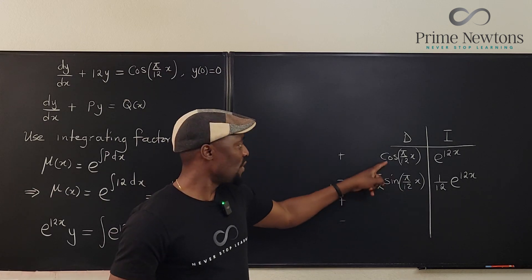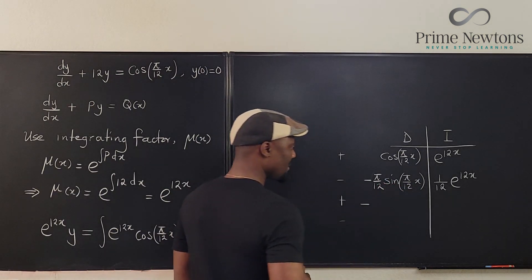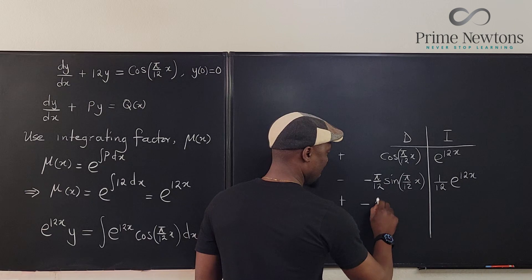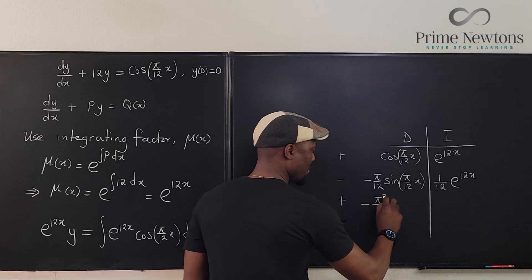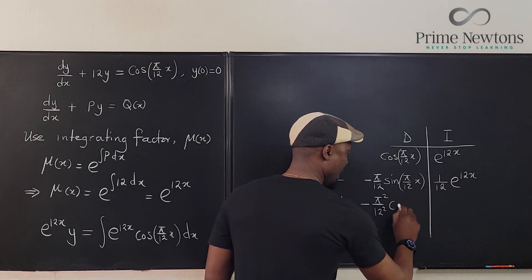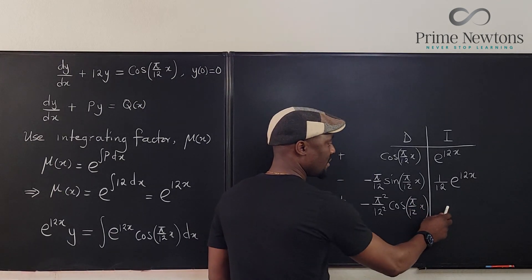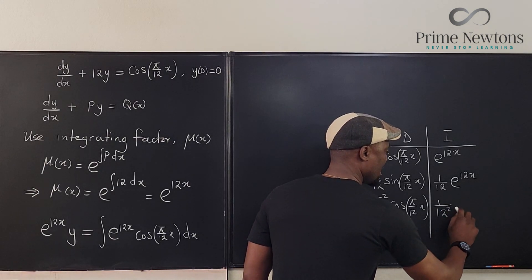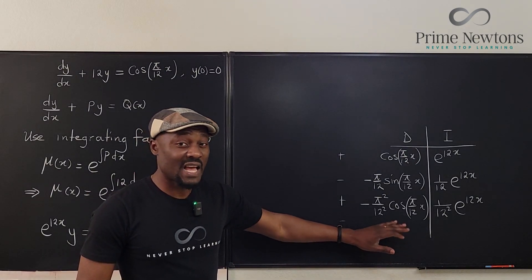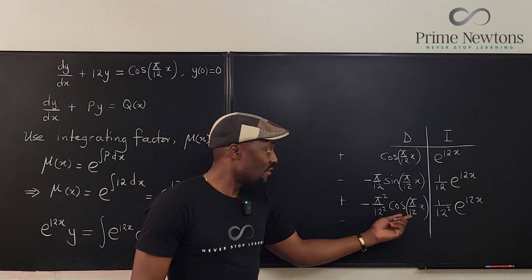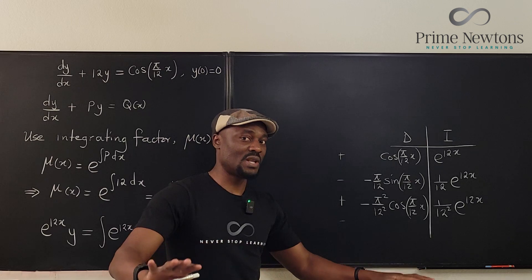Differentiating sine gives cosine, which looks like the original. So differentiating again gives −(π²/12²)·cos(πx/12), and integrating e^(12x) again gives (1/12²)e^(12x). I stop the table here because I've generated a multiple of the original integrand — this is a multiple of what we started with, so we know we're going in circles.